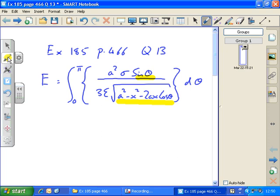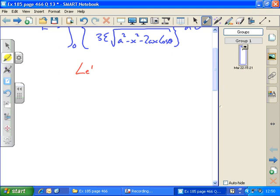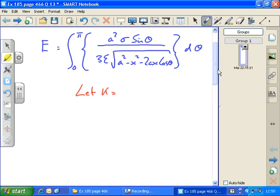I'm also going to let the a squared sigma over 3 epsilon come outside here because they're all constants and call that k. So with that in mind, you could try and proceed and see if you can do it. But the solution carries on below.